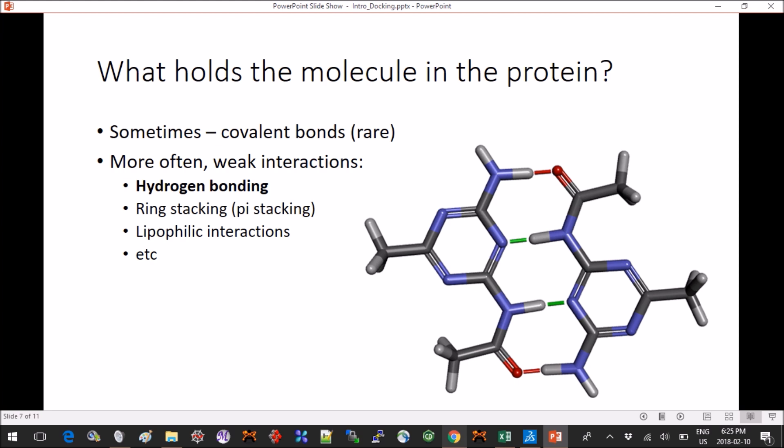And then most of the time you don't form covalent bonds, but your molecule can interact with the protein using hydrogen bonding, which is the most common interaction, pi stacking or ring stacking, lipophilic interactions, etc. By far the most important one is hydrogen bonding. It's very, out of the weak interaction, it's like one of the strongest ones.